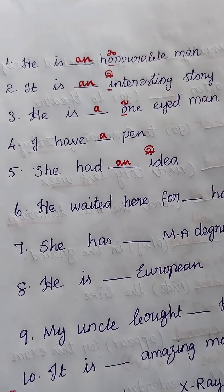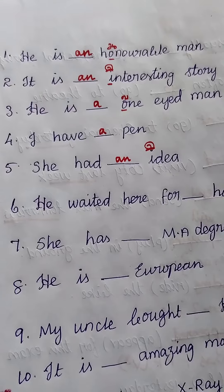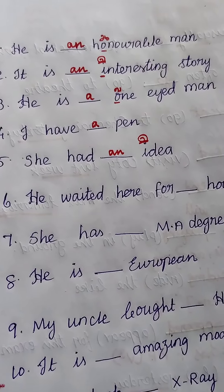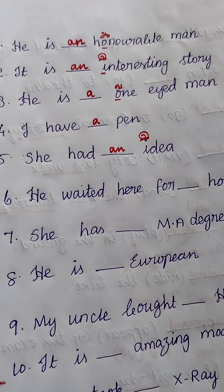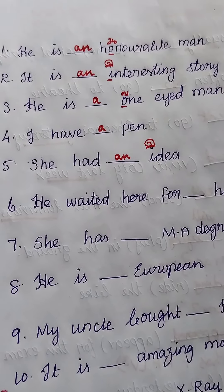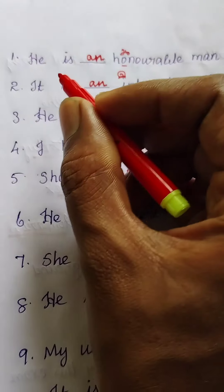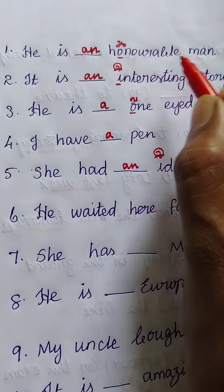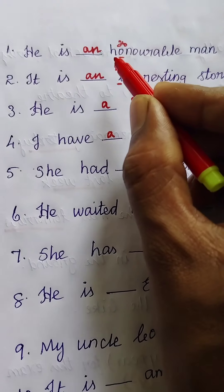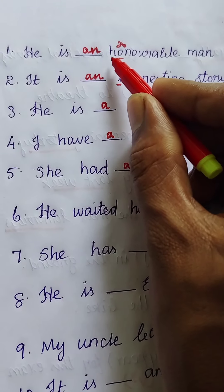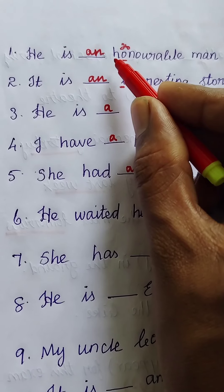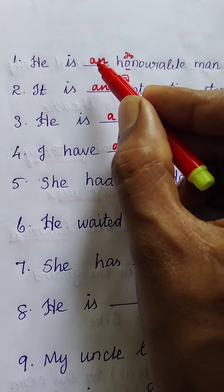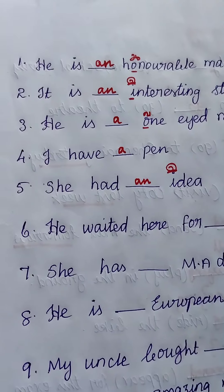Hello friends, we are going to learn articles 'a' and 'an' — where, when, and how should we use these articles. In the first example, 'He is a/an honorable man' — the first letter is H.